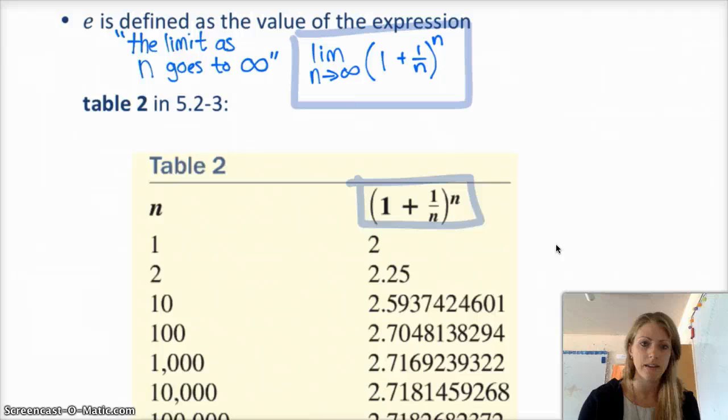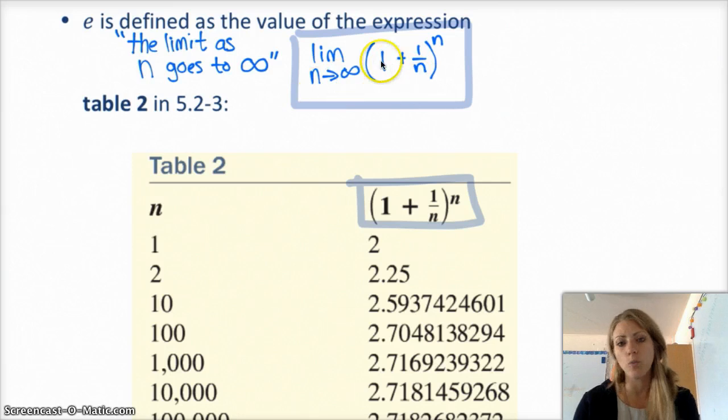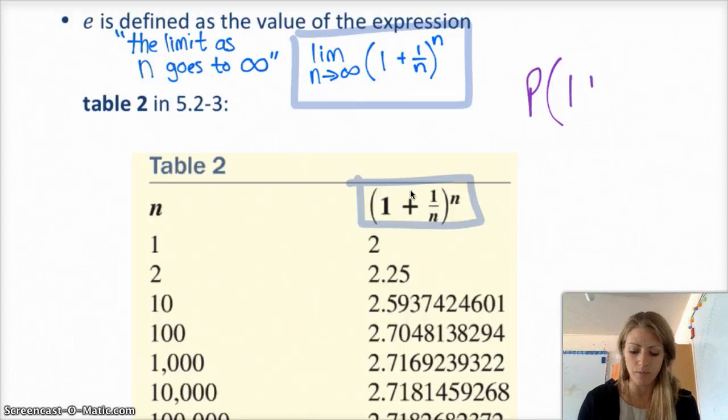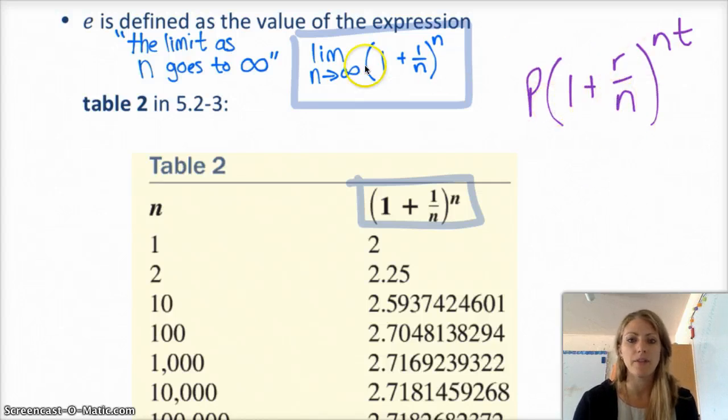So, of 1 over 1 plus n to the n, right, and if you look at our compound interest formula, that's your principle times 1 plus r over n to the n times t. And, so, if you notice, if I were to remove the r and just put a 1 there and remove the t, I would have this formula, 1 over 1 plus n to the n. And so, what happens is, when n gets to infinity, this whole thing turns into e.